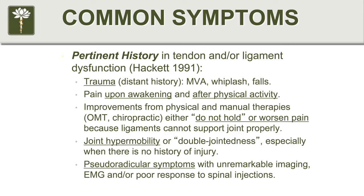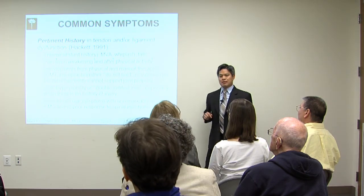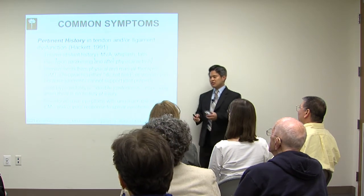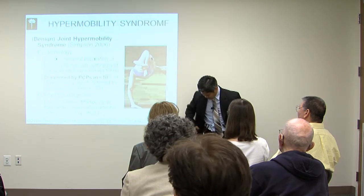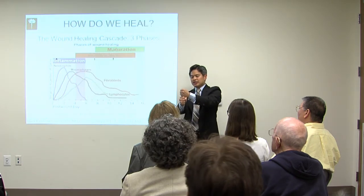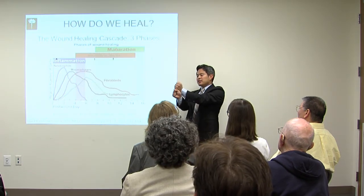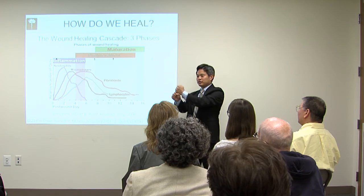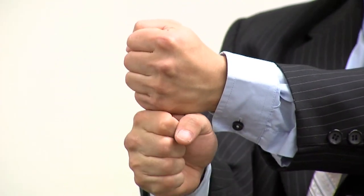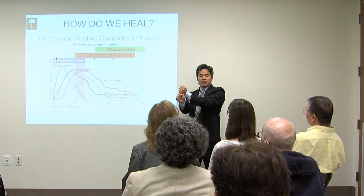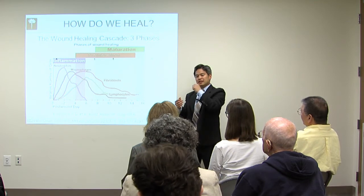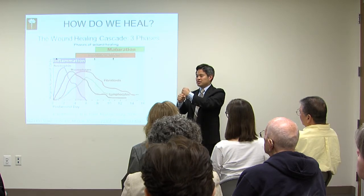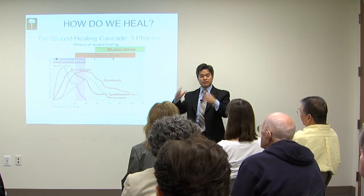If you get manual therapy — physical therapy, osteopathic manipulation, chiropractic — one of two things happens: either it helps your pain but it doesn't hold, or it actually makes your pain worse. Why? If you have a joint that's out of alignment and it's got ligaments and tendons supporting it, yes, you can get that joint back into alignment through manual therapies. But the problem is those ligaments and tendons don't have the integrity to keep your joint in alignment, so it's just going to fall out of alignment again — that's why the improvement only lasts a few days. If the injury is significant, that joint can never really get back into alignment because those ligaments are just loose all over the place, and that's what happens when manipulation actually makes your pain worse.